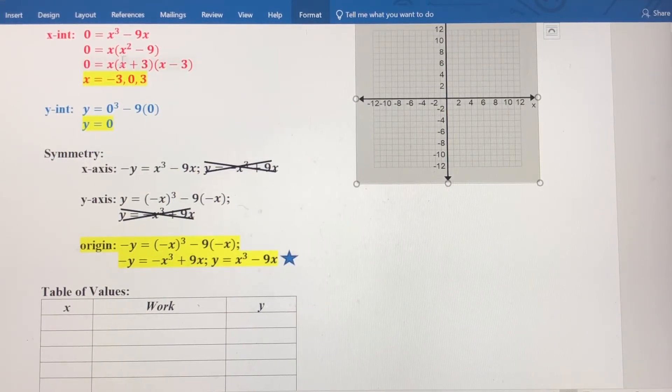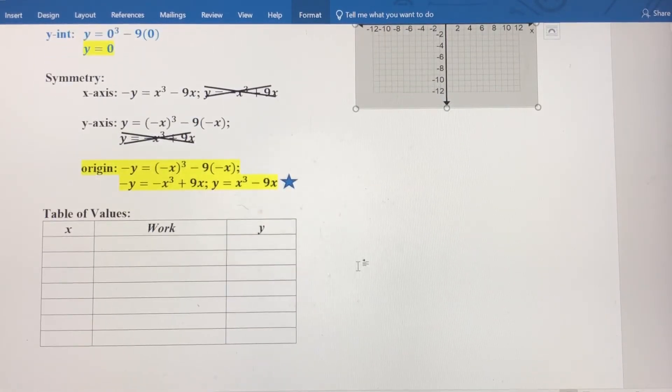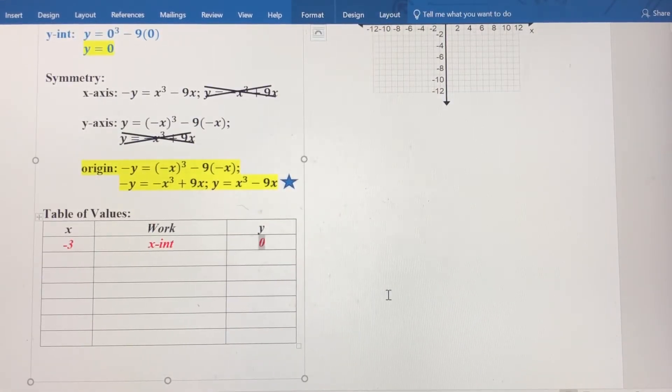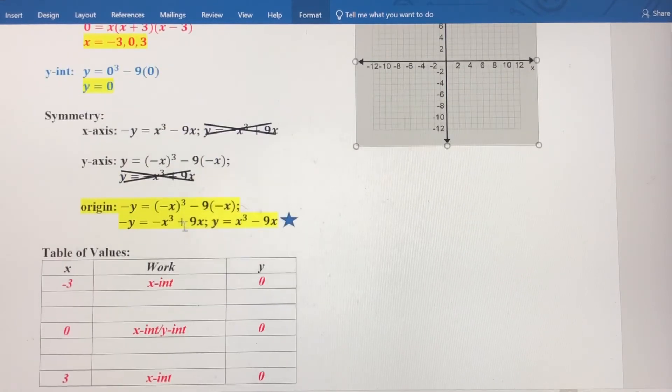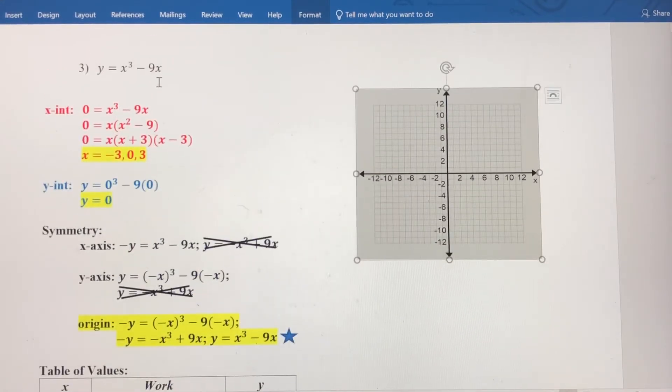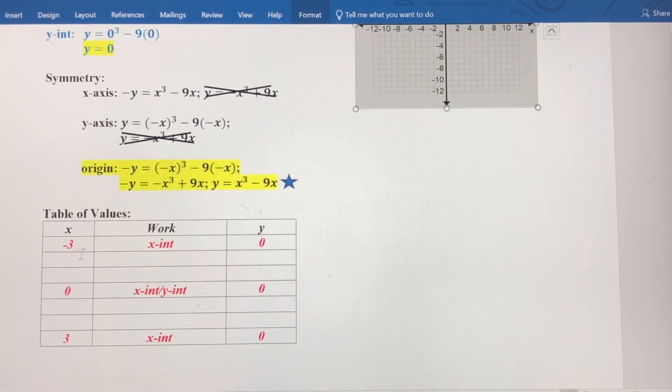So a lot of information here we can use to put into our table of values. So let's start out with the x-intercepts, at negative 3, 0, at the origin, and then at 3, 0. Notice the origin here doubles as both the x-intercept and the y-intercept. Now cubic functions are a little bit more complicated than quadratic functions, so I'm going to notice I've got more spaces here. I'm going to find a couple more points.